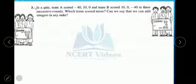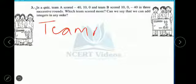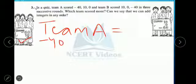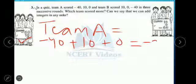First, team A total. What is team A total? Team A, minus 40 plus 10 plus 0. Result will be minus 30 because plus minus minus.